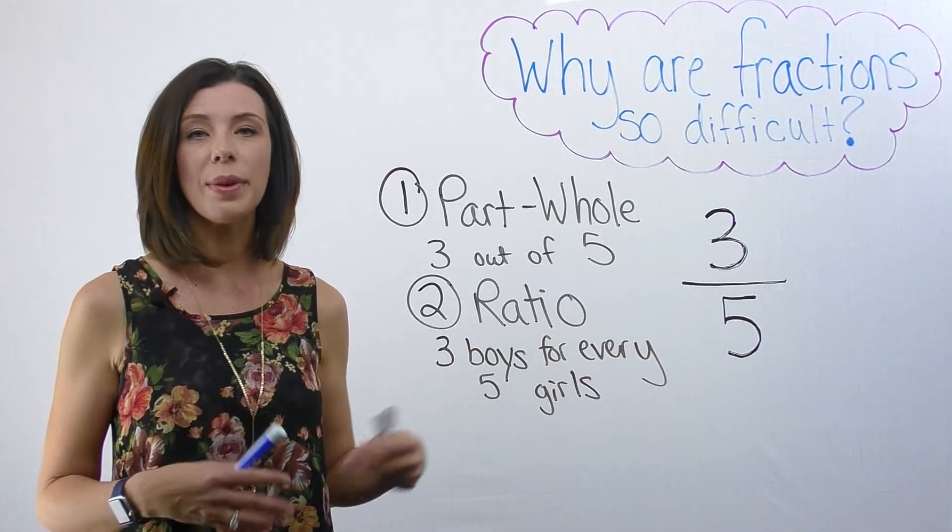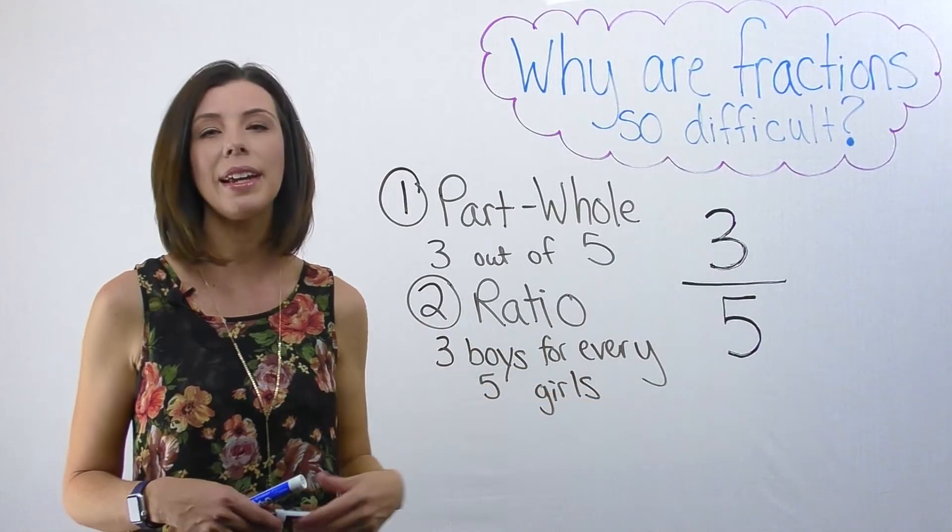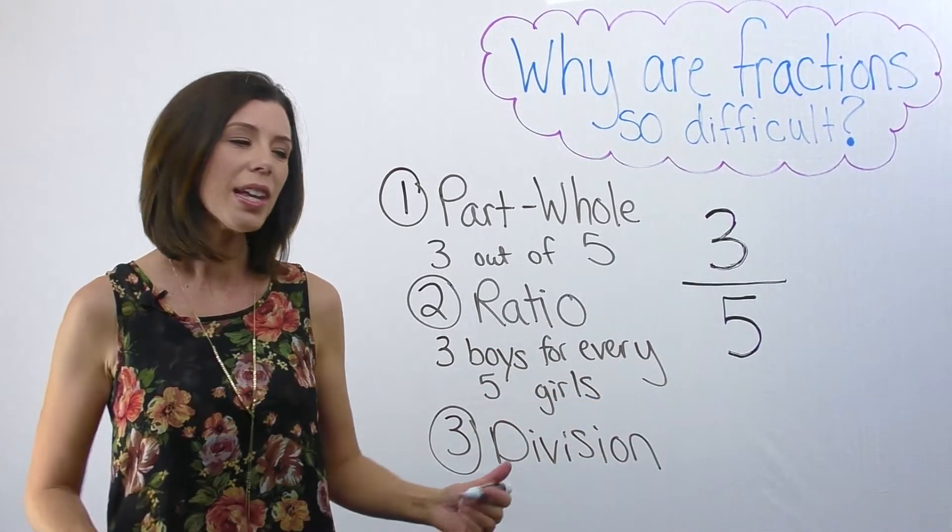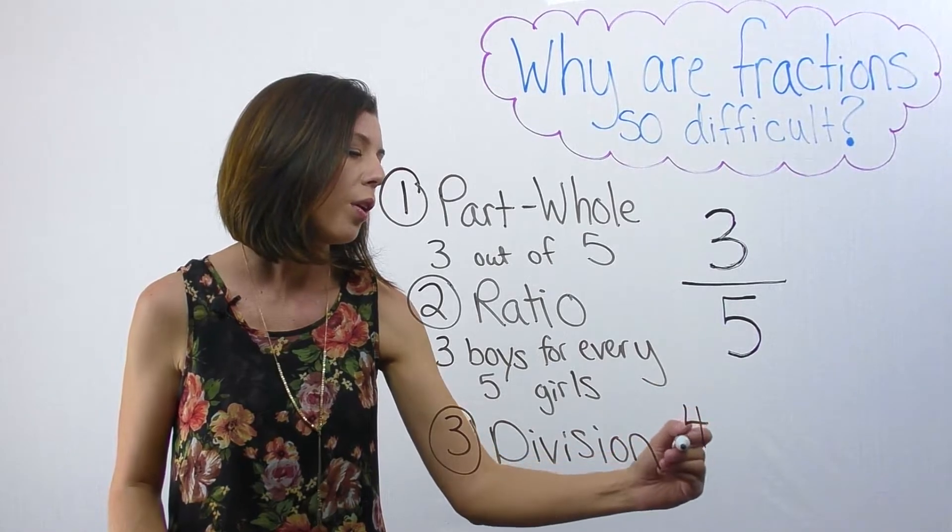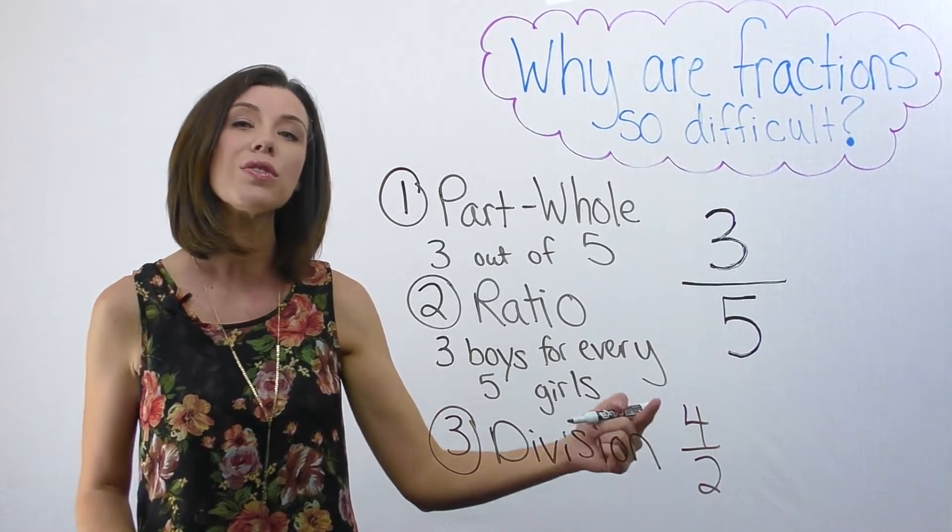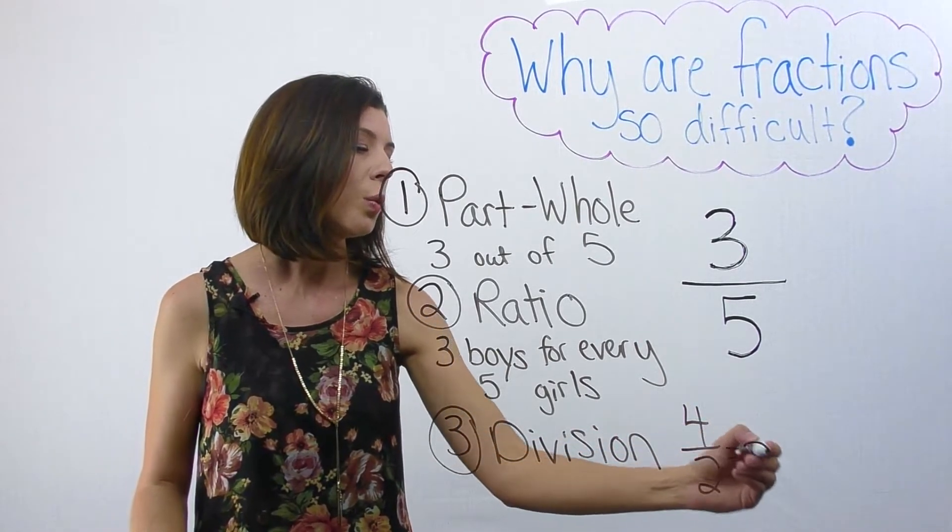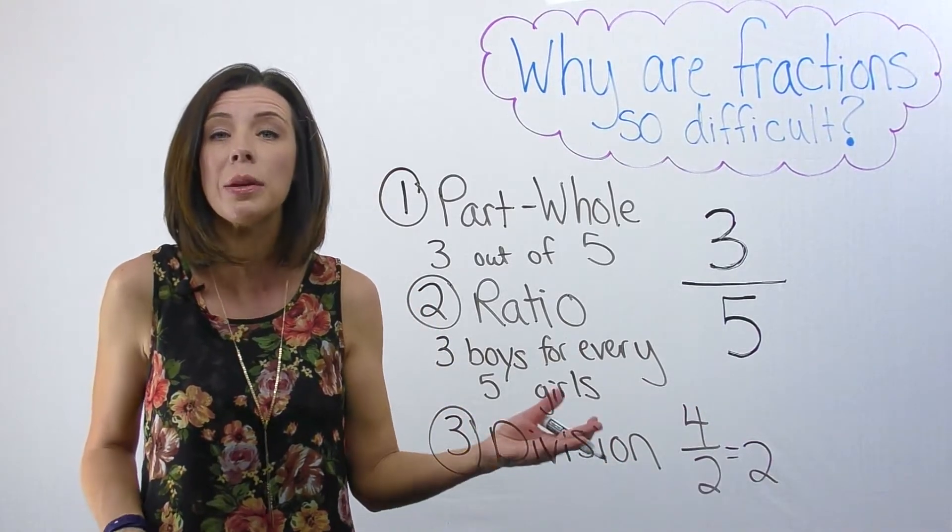The last way that we can think about this number right here is as division. Just like I can write four over two, I can read this as four divided by two, which would be two. It's just a division bar.